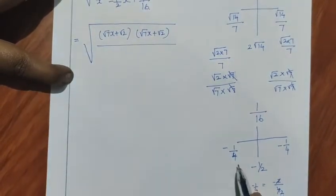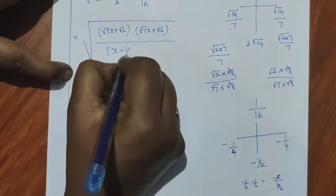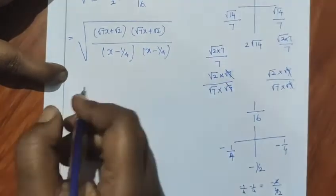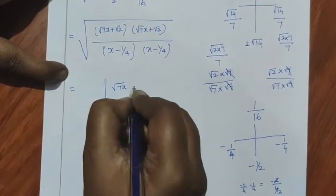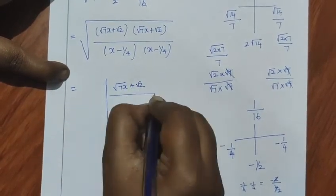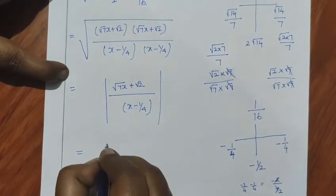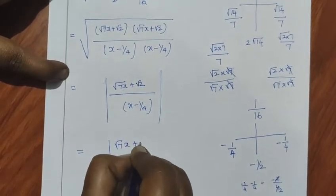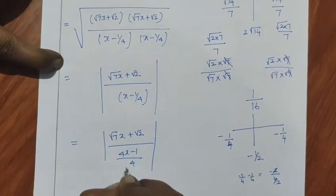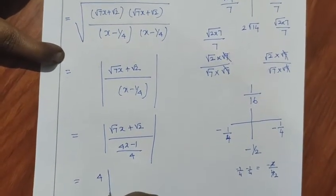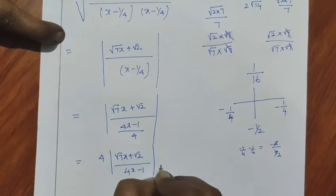The coefficient of x squared is 1, so we have (x minus 1 by 4) into (x minus 1 by 4). Taking the square root of modulus: we get root 7 x plus root 2, divided by x minus 1 by 4. Writing x minus 1 by 4 with LCD as 4x minus 1 over 4, which is reciprocal. The answer is 4 modulus of (root 7 x plus root 2) divided by (4x minus 1).